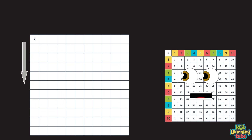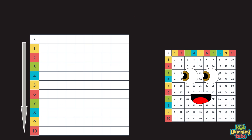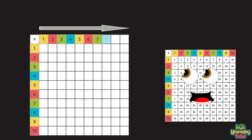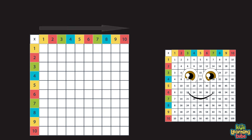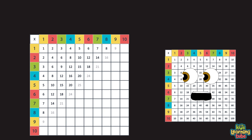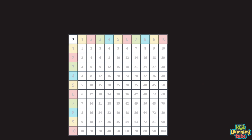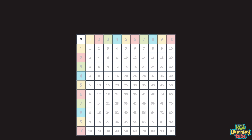You see that vertical line? It's numbered 1 through 10. And that horizontal line is numbered the same again. All the numbers on the inside we will cover next. They're the answers to the equations you will see in text.